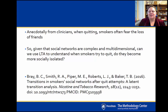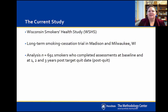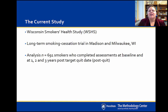If you're particularly interested in this question or want to learn more about this example, please see the paper listed on the screen, published in Nicotine and Tobacco Research. We used LTA to first describe subgroups of individuals post-quit with different types of social networks, and then to examine change over time in social network type. The current study used data from the Wisconsin Smokers Health Study, a long-term smoking cessation trial in Madison and Milwaukee, Wisconsin, looking at 691 smokers who completed assessments at baseline and at one, two, and three years post-target quit date.